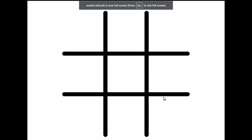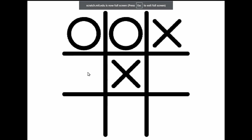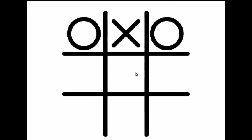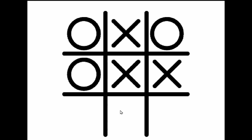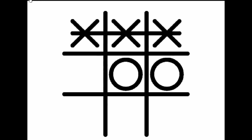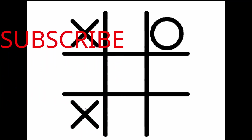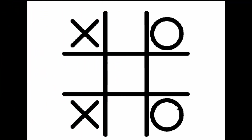Now for the big test: clicking corners gives us a win with a diagonal line drawn - it works! If we draw, filling all squares without a winner, it stops the game. Thank you for watching, please hit the subscribe button and leave a like.